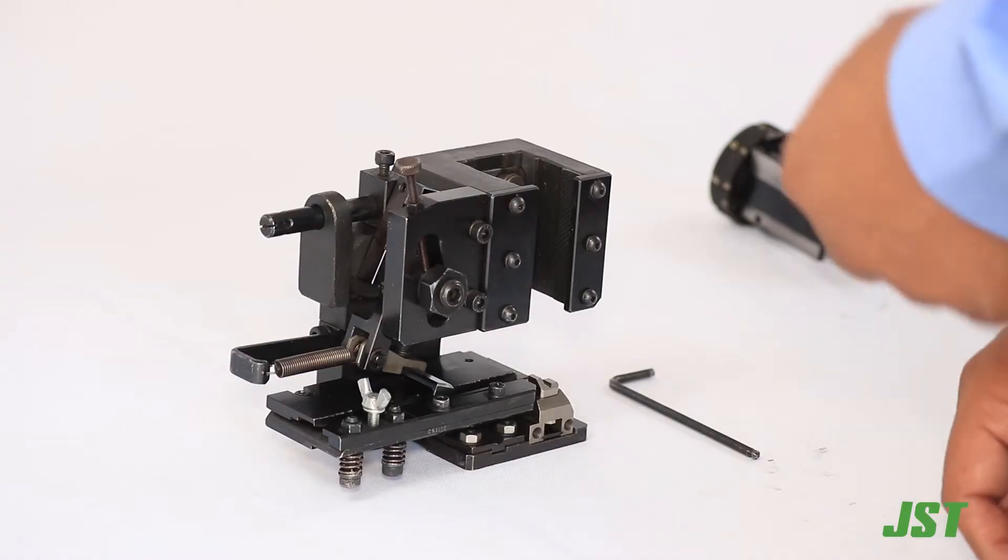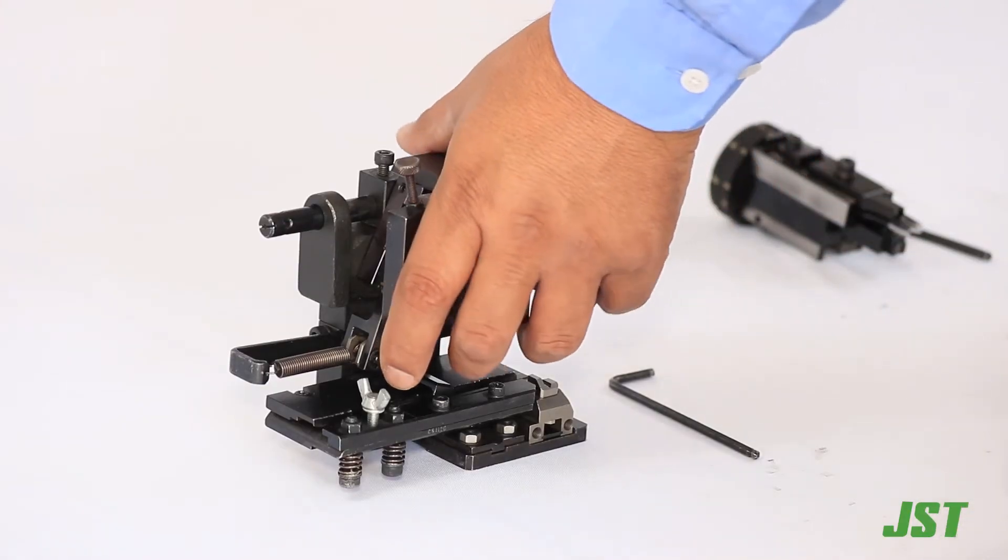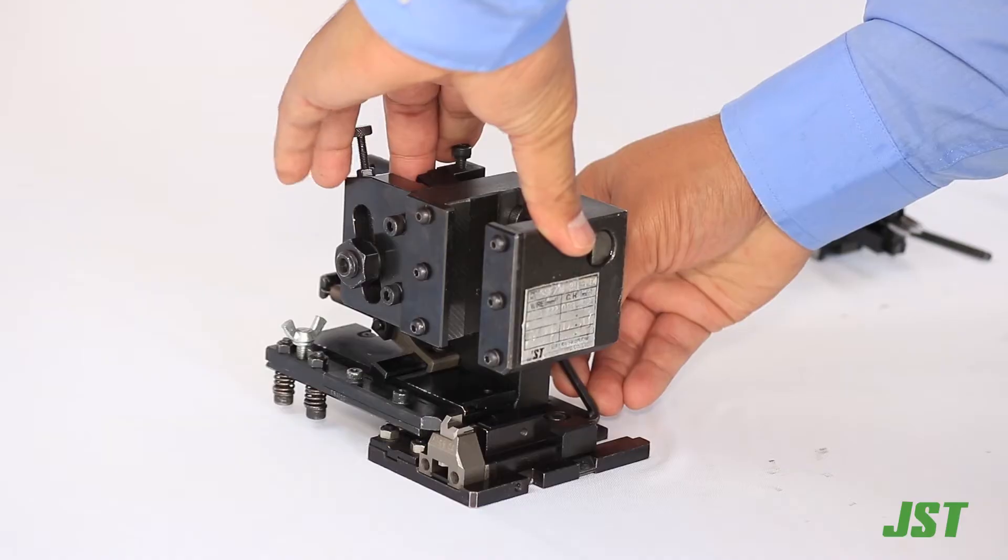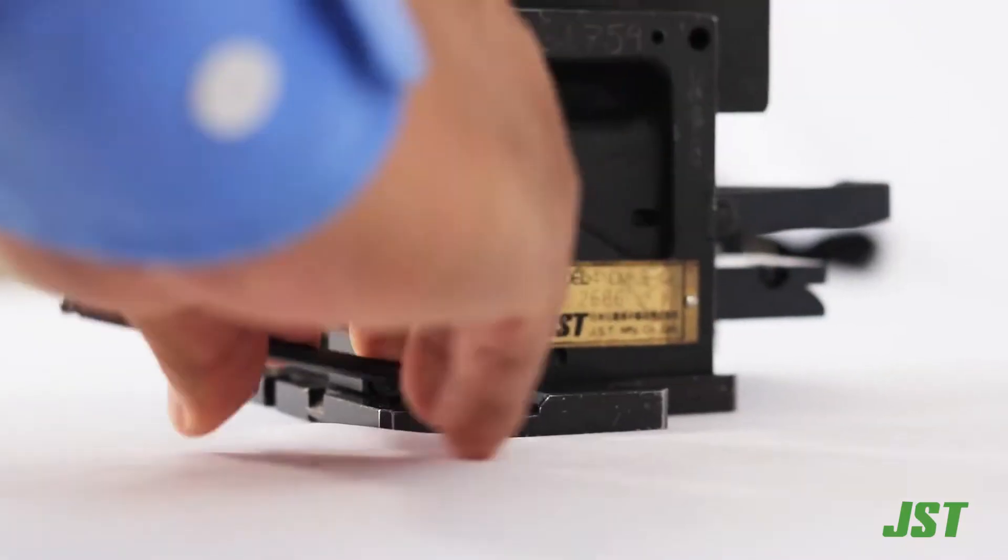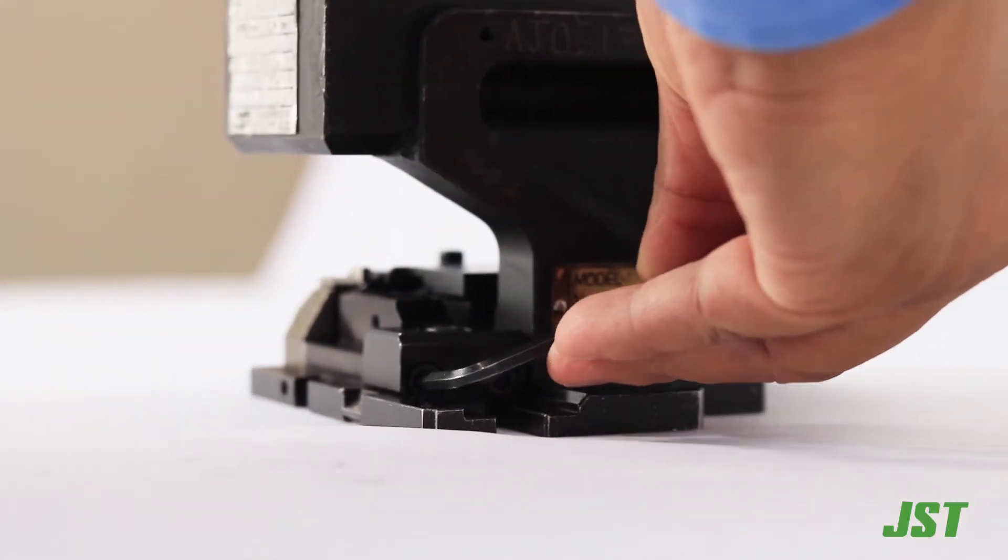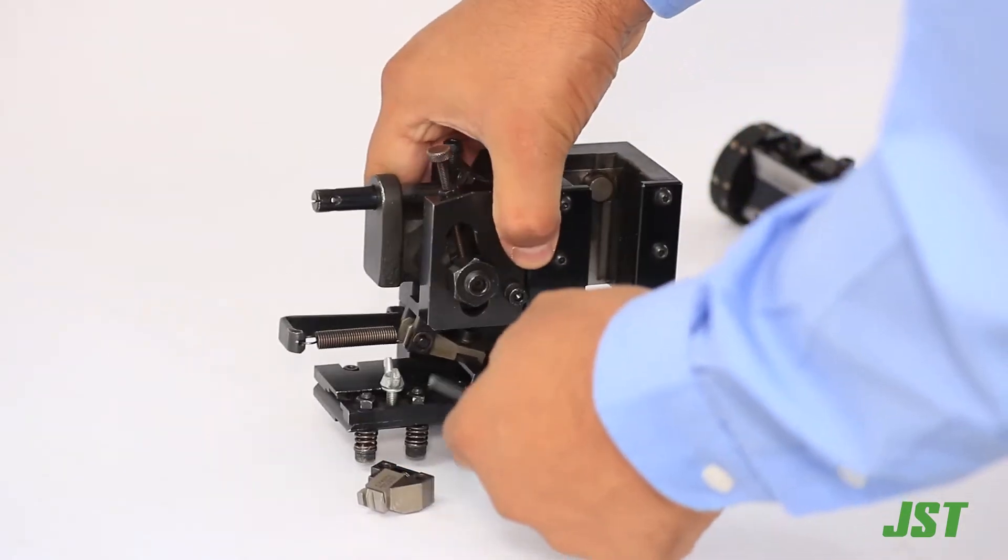For the replacement of one or both anvils, we must remove two screws located in the back of the die block using a 4 mm Allen wrench key. Remove the shutter blade and the anvils.